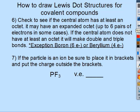Step six: always check to see if the central atom has at least eight electrons. It may have an expanded octet of up to six pairs (twelve electrons) in some cases. If the central atom does not have at least an octet, it will form a double or triple bond. Boron only gets six electrons and beryllium gets four — hydrogen, boron, and beryllium do not get eight. If the particle is an ion, place it in brackets and put the charge on the outside.